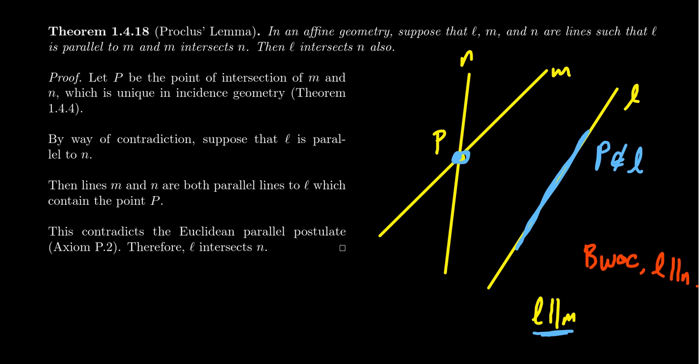By the Euclidean parallel postulate, there should be a unique line parallel to L that passes through P. But we have them: count one and two. That's a violation of the Euclidean parallel postulate, so we get a contradiction.